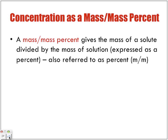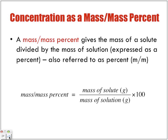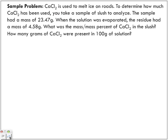Concentration as a mass/mass percent. A mass/mass percent gives the mass of a solute divided by the mass of solution, expressed as a percent, also referred to as percent (m/m). The equation is: mass/mass percent equals mass of the solute in grams divided by the mass of the solution in grams, times 100 to give us our percent.